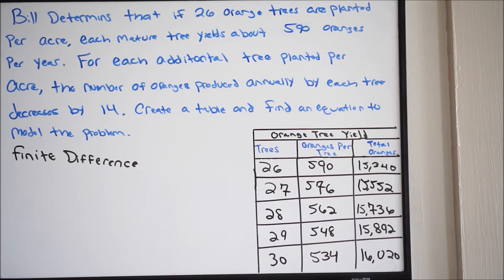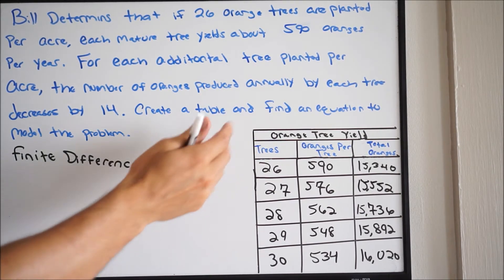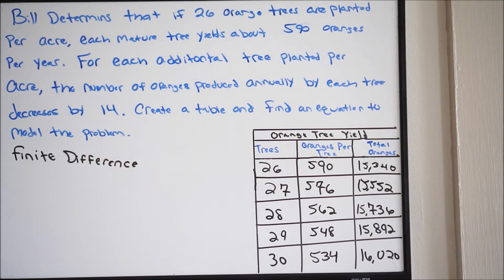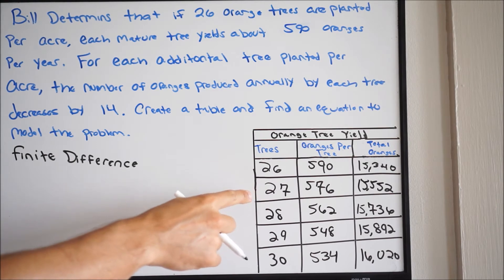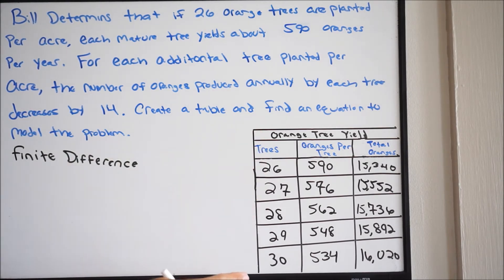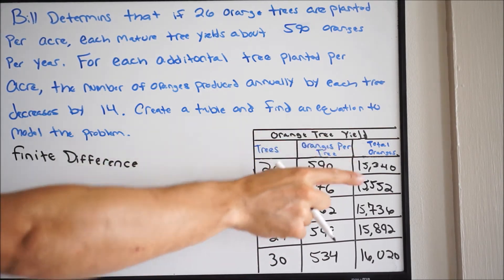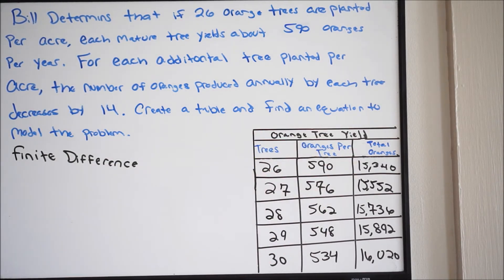So what we're going to do is we're going to compare our y values. Look at our table — we have three things here: our trees, our oranges per tree, and our total oranges. If you were to look at this on a graph, we're looking at an x, y. Our x here is going to be our trees, and our y is going to be total oranges.